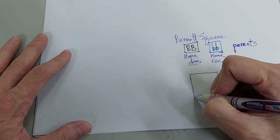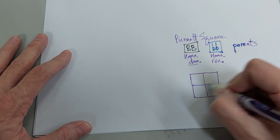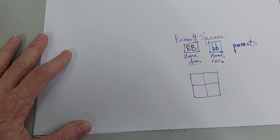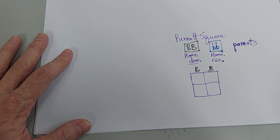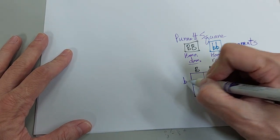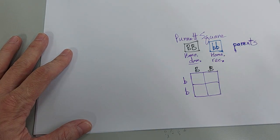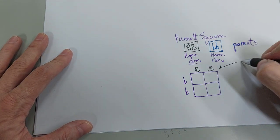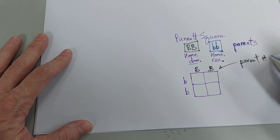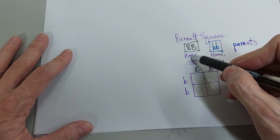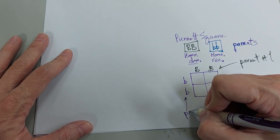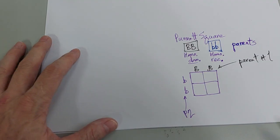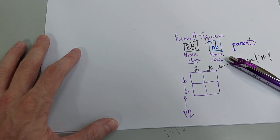And basically what you're going to do is you're going to put the parental alleles up here at the top. So that's parent number one, and you're going to put parent number two over here. So this is parent number one. Parent number one is homozygous dominant. Parent number two, I'll just write P2, is going to be homozygous recessive.